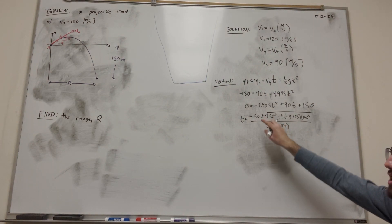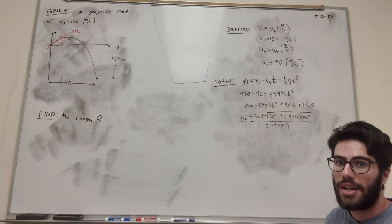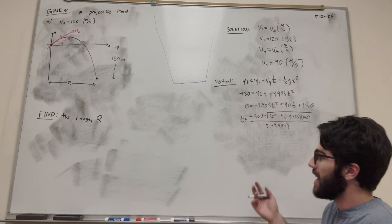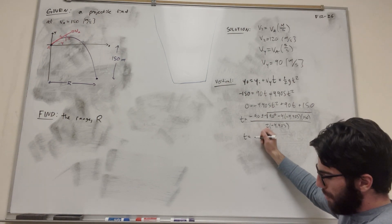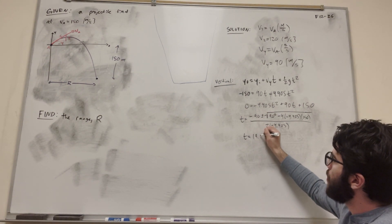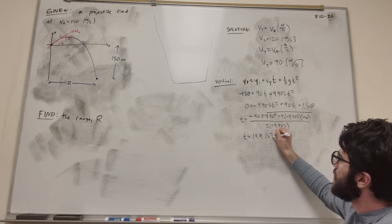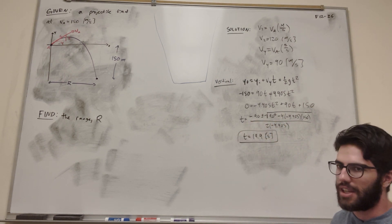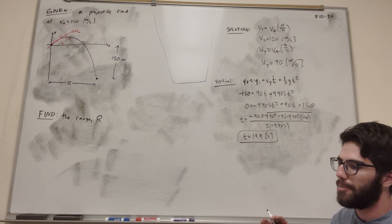Okay, so if you solve this, you're going to get two numbers. One's going to be a negative number, and one's going to be a positive number. Obviously, you can't have negative time, so we're going to have the positive one. So t is equal to the positive, which is going to be 19.9 seconds. So here we go. We found how long it takes the ball to hit the ground. Now all we have to do is see how far it travels in that time.